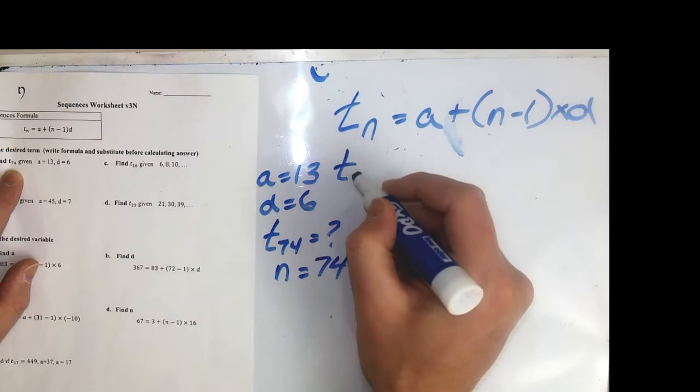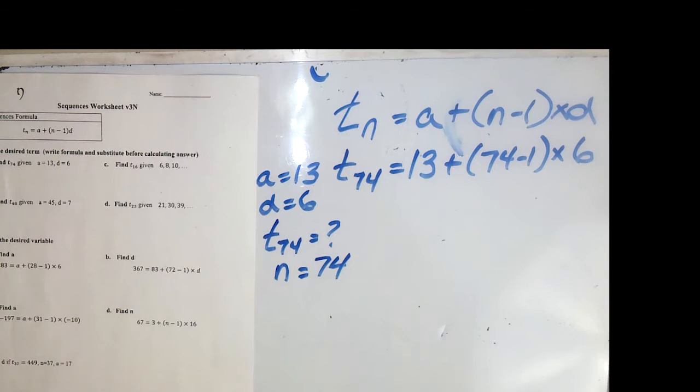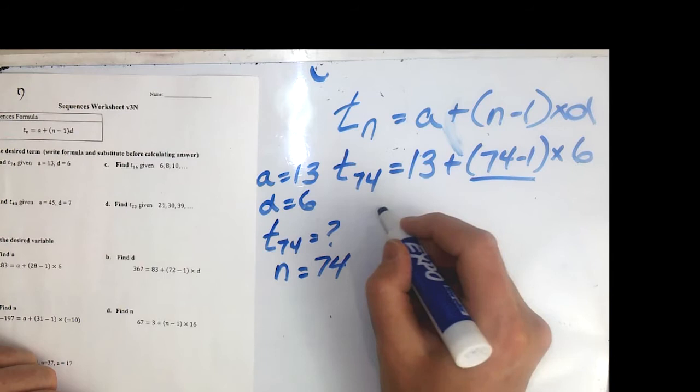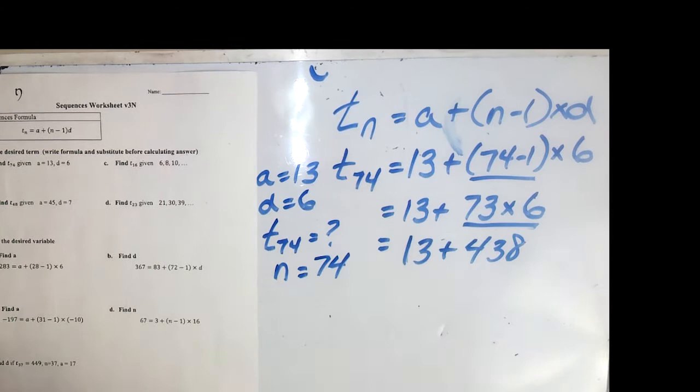Now we're going to take these and put them in the formula. T is what we're looking for, but we add the 74 — it's not a number we're solving for. A is 13, N is 74, and D is 6. All the numbers are on the right side, so we're going to start with BEDMAS: brackets first, multiplication second, and then addition last.